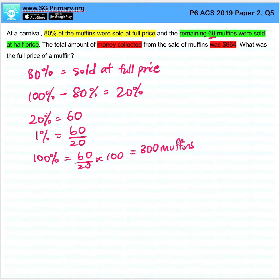Which gives us 300 muffins. This is the total. The amount of money collected from the sale of muffins was $864. What was the full price of a muffin? So this is the muffins sold at full price, and then after that, sold at half.